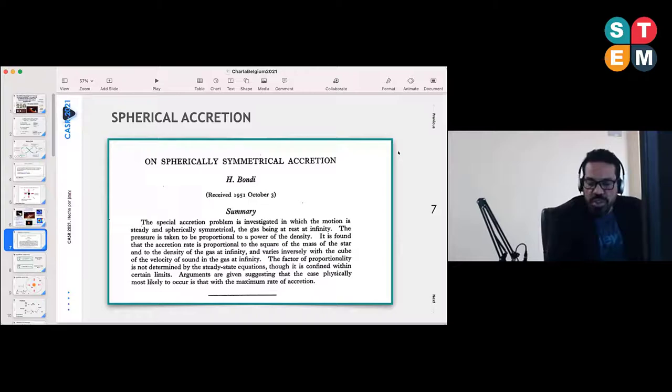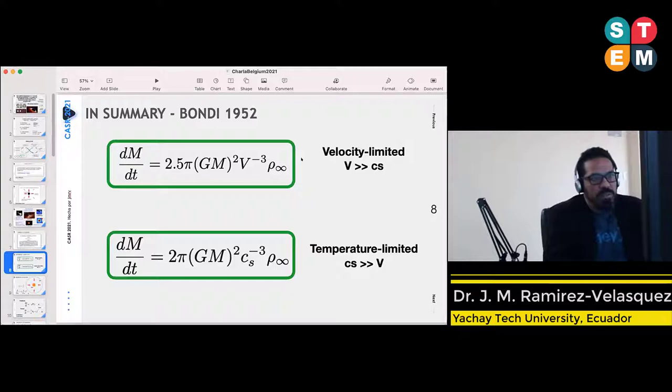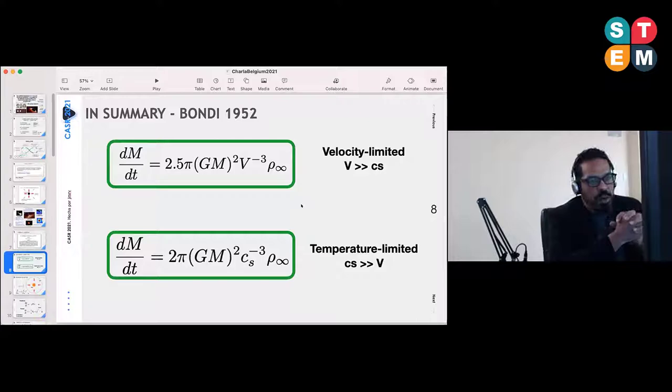Spherical accretion is important because the geometry is very common in nature. In the seminal work, Bondi 1952 proposed the mathematical formulation for the steady-state equations to study this kind of phenomena. There are basically two extremes where we are going to be moving about.